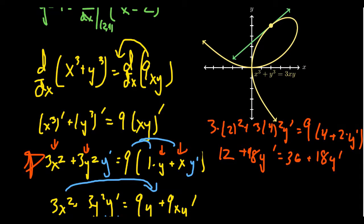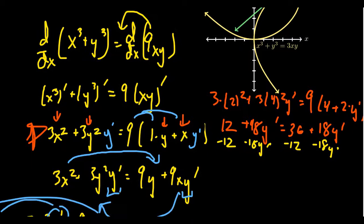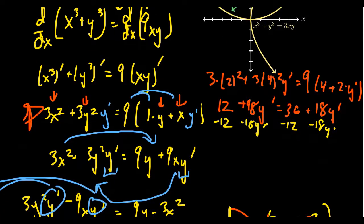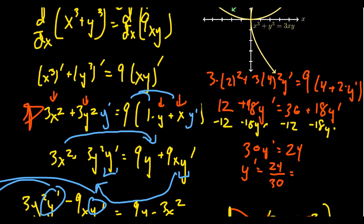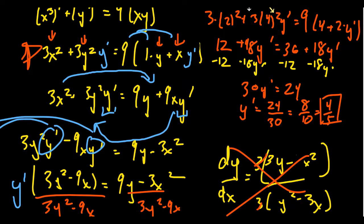Combining like terms: subtract 18·y′ from both sides and subtract 12 from both sides. We get 48 minus 18 equals 30·y′, and 36 minus 12 equals 24. So y′ equals 24 over 30, which cancels to 8 tenths, or 4 fifths — the exact same value as before. This approach of plugging in x and y right after the calculus step is much simpler.